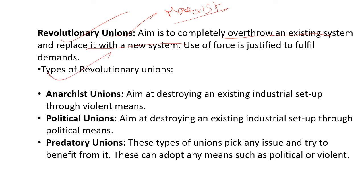Types of revolutionary unions: Anarchist unions aim to destroy an existing industrial setup through violent means — they may put factories on fire or resort to violence. Political unions aim to destroy the existing industrial setup through political means, taking help from opposition political parties. Predatory unions pick any issue and try to benefit from it — they don't care about the real interests of workers; only some people benefit.